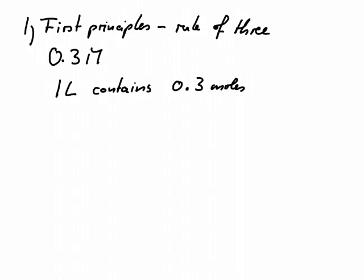That's the definition of this capital M, mole per liter. So one liter contains 0.3 moles, but we don't have one liter. We have only 0.1 liter. So 0.1 liter, therefore, contains x mole. And this is what we want to find out.